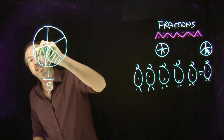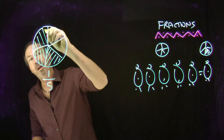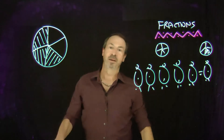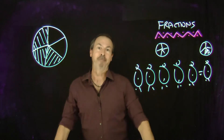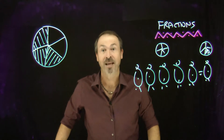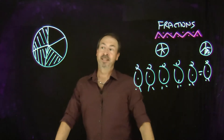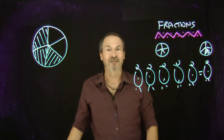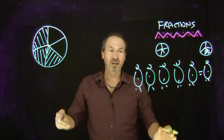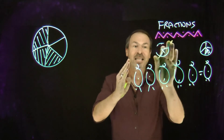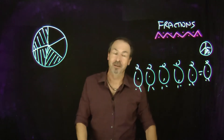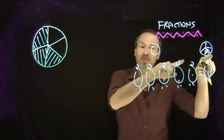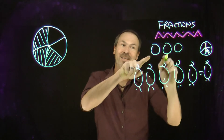Suppose I change the problem to this: some number of pies were shared equally amongst some number of students to yield this result. How many pies? How many students? Well, you just did three copies of one-fifth here. So this must be three copies of what we just did. One pie yields one-fifth per student, so three copies of this would be three pies.